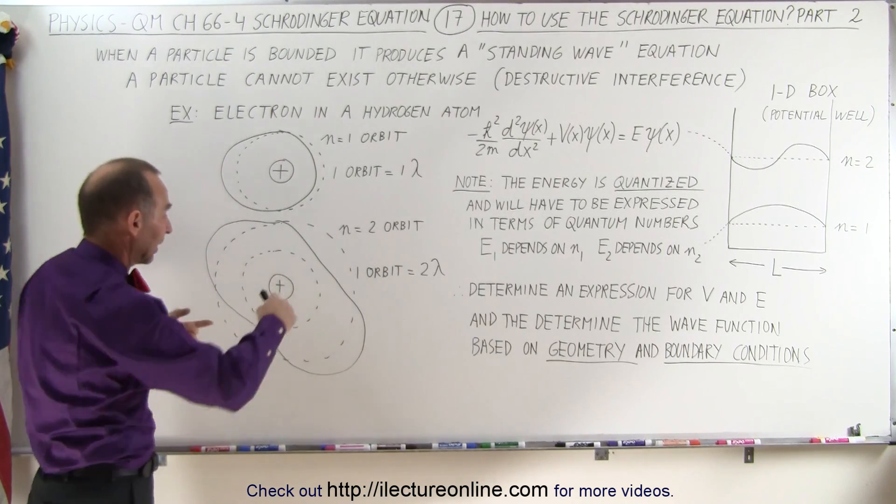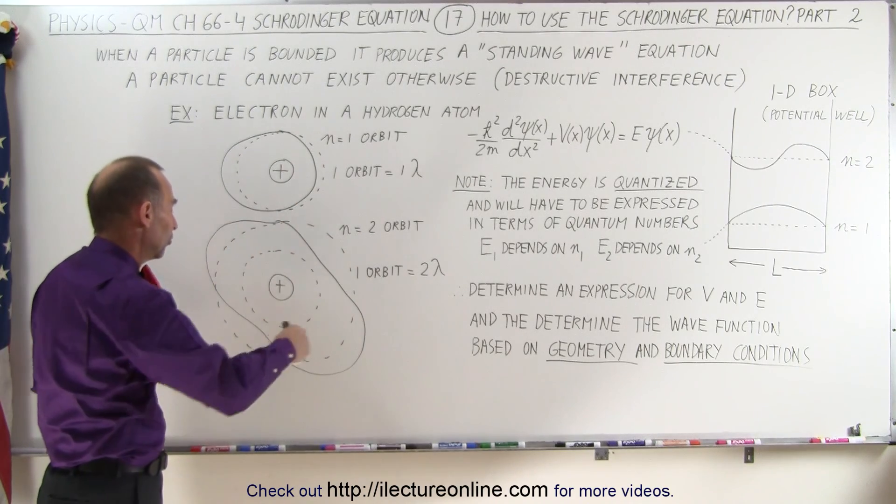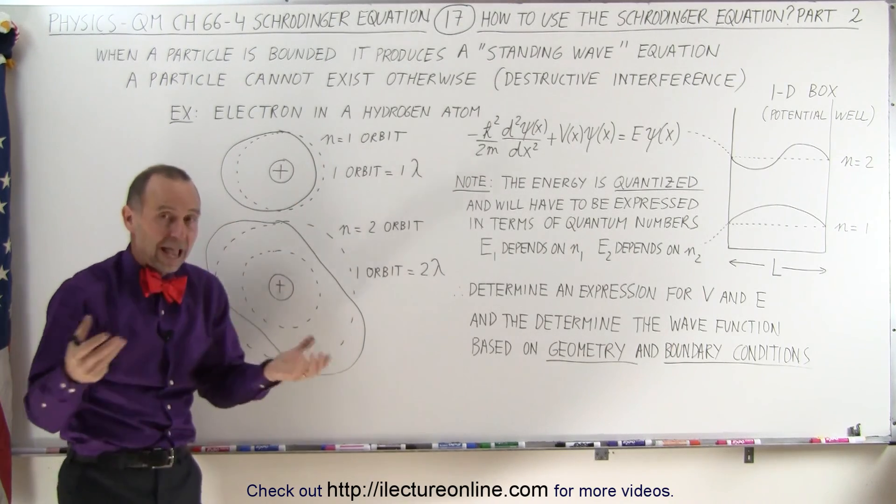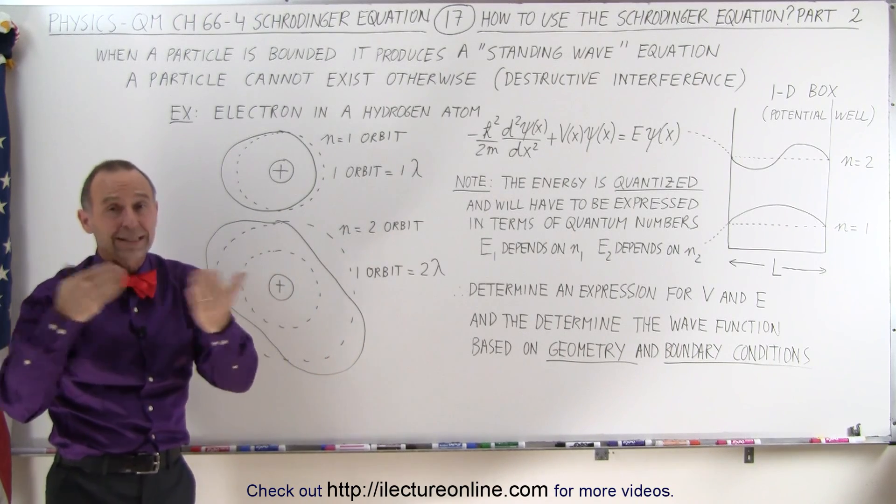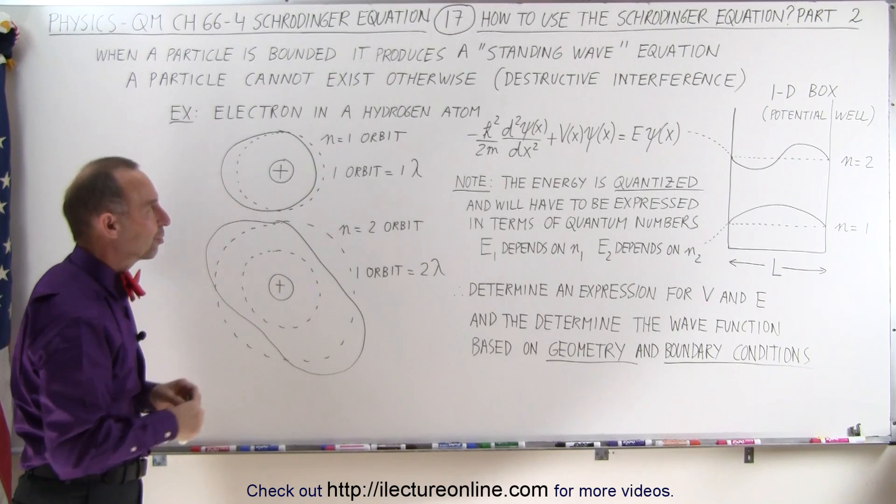If a particle, like an electron, would move around the nucleus of an atom such that the orbit would be equal to two and a half wavelengths, then there would be destructive interference and essentially the particle cannot exist there. So the same principle holds true.